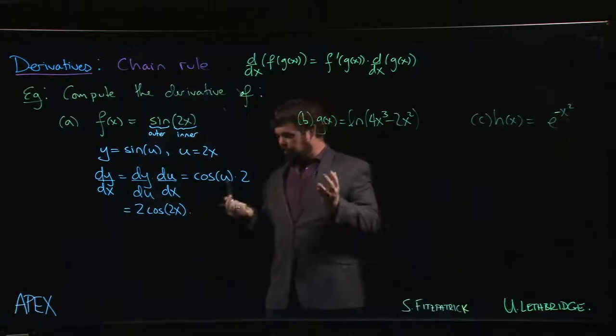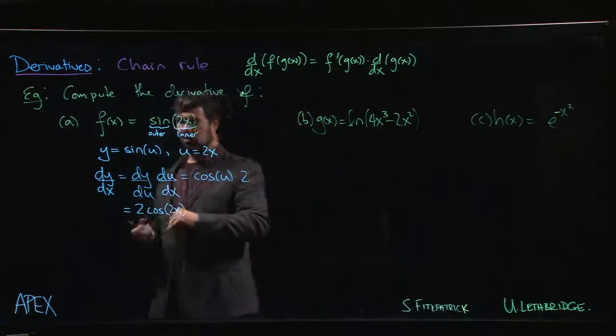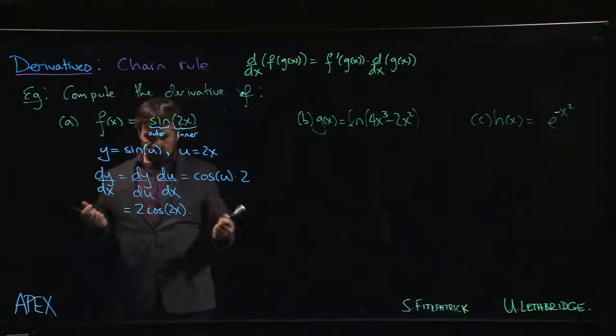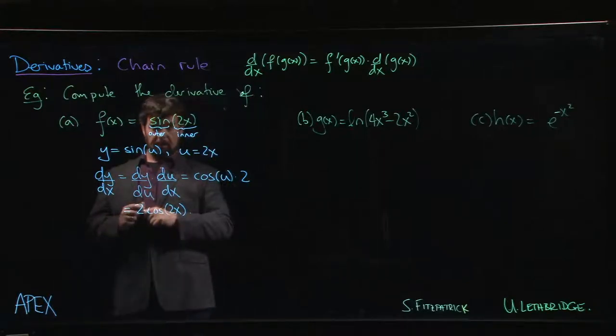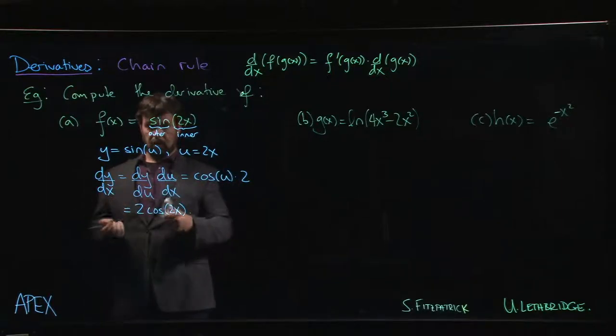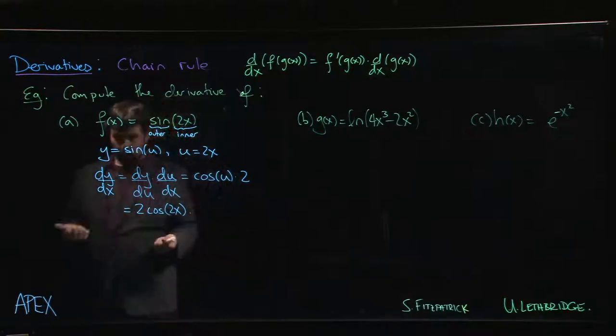So again, notice that it's not simply cos 2x. It's not cos 2. We do the derivative of the outside first, leave the inside alone, then multiply by the derivative of the inside. There are those two parts. You should always get a product when you've done the chain rule. If you don't get a product, something's gone wrong. Okay, so we have that.